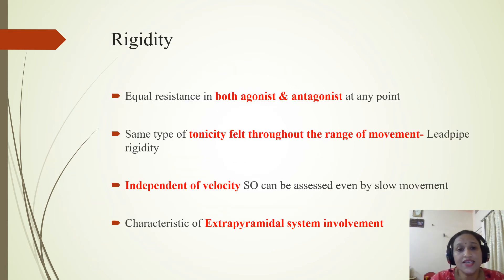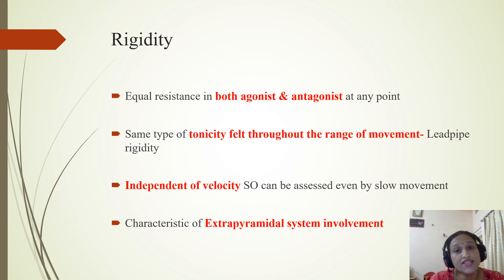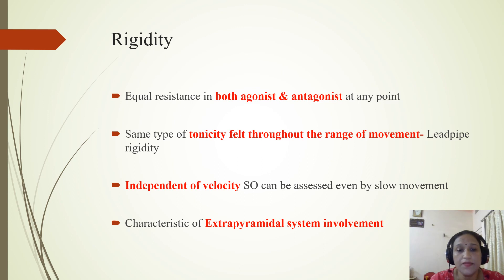In rigidity, there is equal increased resistance in both agonist and antagonist muscles at any point. The same increased tonicity is felt throughout the entire range of movement, which we call lead pipe rigidity. It is independent of velocity, so it can be elicited even with slow movement of the limb, and it is characteristic of extrapyramidal system involvement.